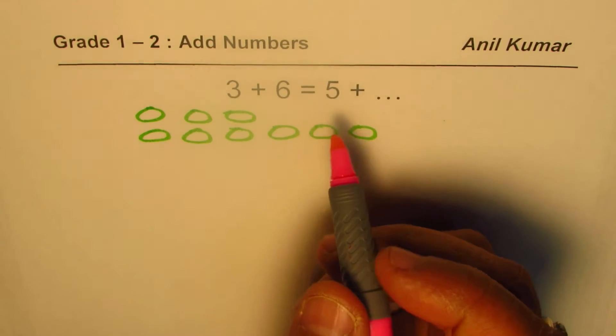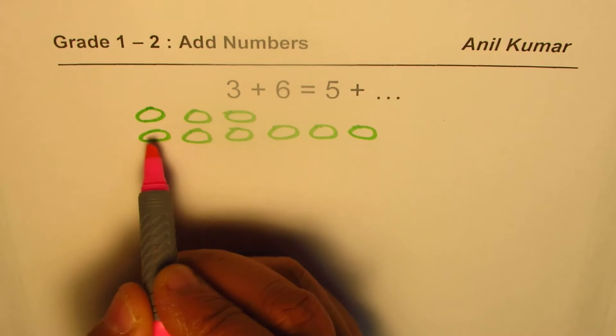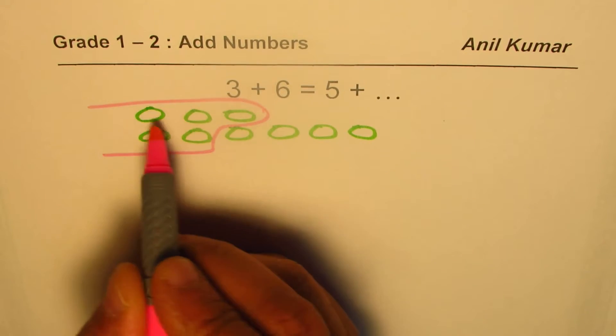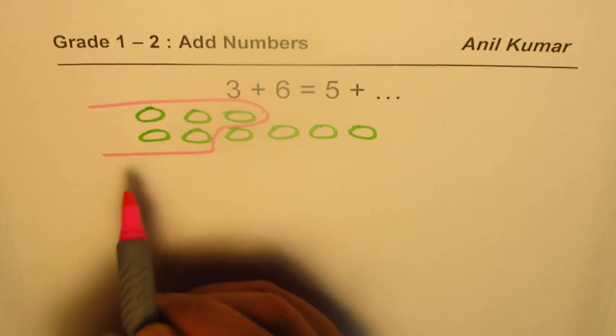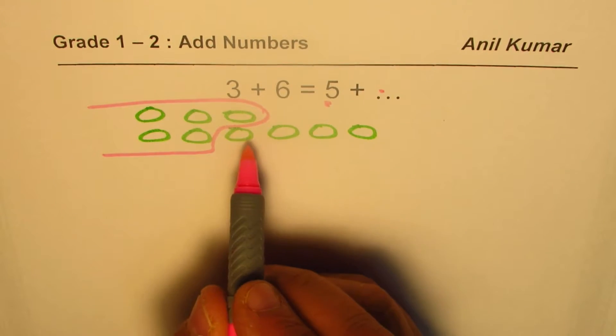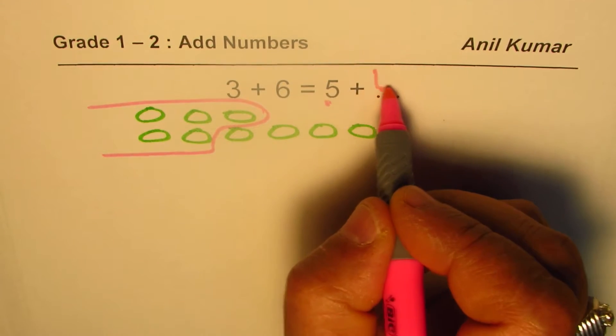So what we will do here is we'll take away five from here: one, two, three, four, and five. So these become five. That takes care of this number five. So what comes here is those which are left: one, two, three, four. So I should get four here.